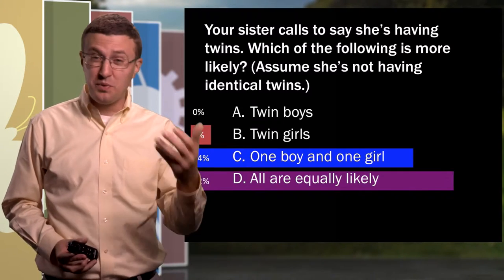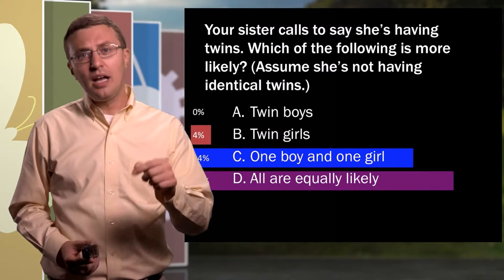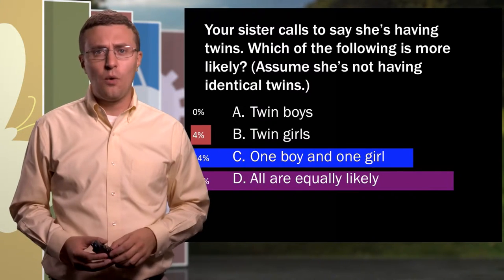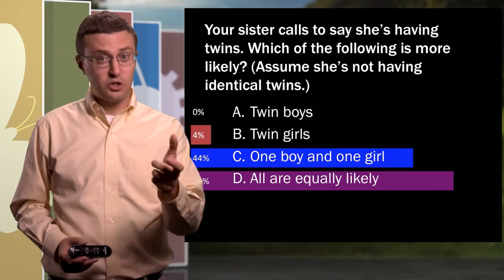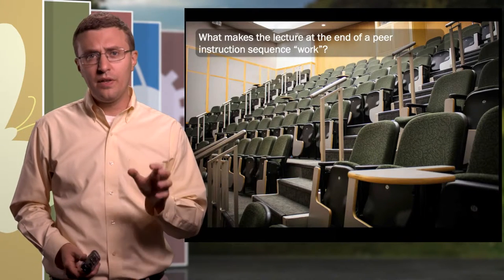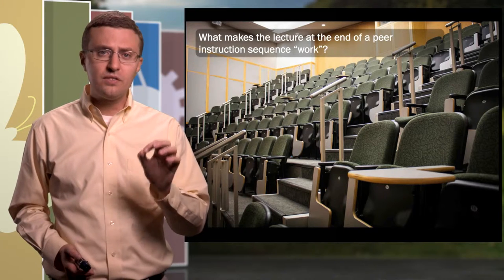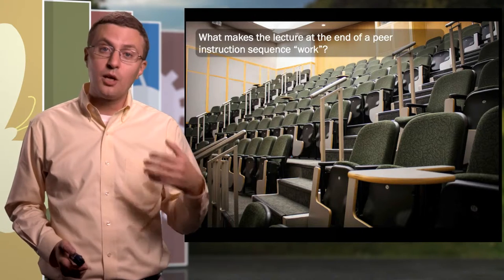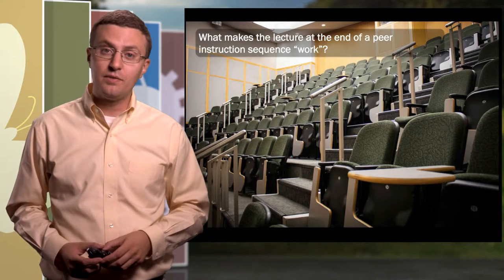In this case, there's a simulation we can do. We can flip coins and kind of determine which is the right answer. And at that point, then I will often take to the chalkboard and spend a few minutes going through an explanation of the concept underlying this question. And so there's a lecture piece there, but it comes at the end of the process. What I'd like you to do is to take just a minute or two and think about this question. What makes the lecture at the end of this kind of peer instruction sequence work?